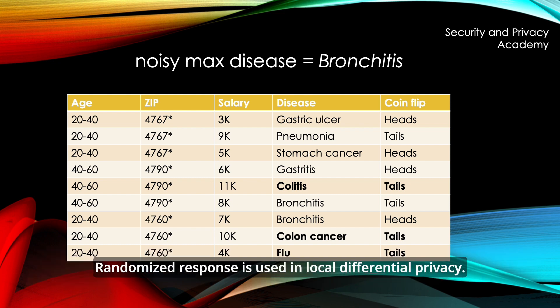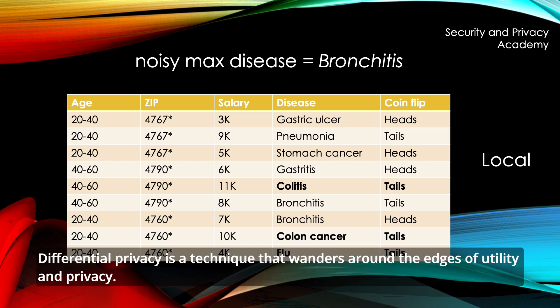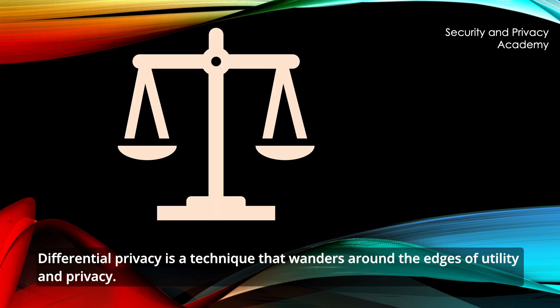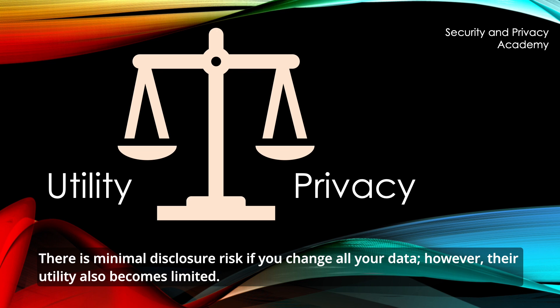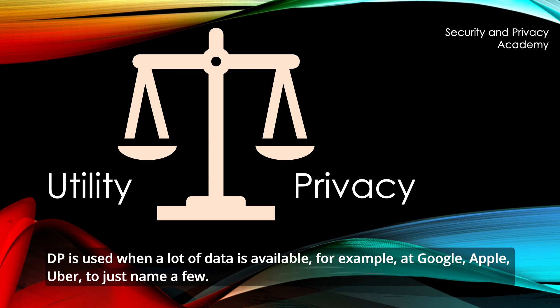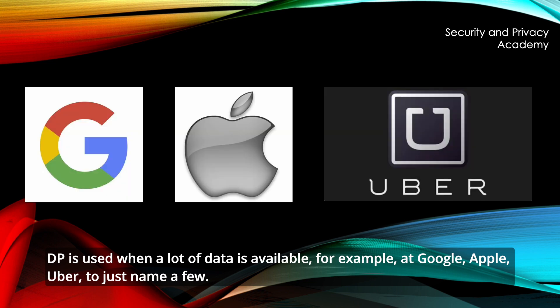Differential privacy is a technique that wanders around the edges of utility and privacy. There is minimal disclosure risk if you change all your data; however, the utility also becomes limited. DP is used when a lot of data is available — for example, at Google, Apple, and Uber, just to name a few.